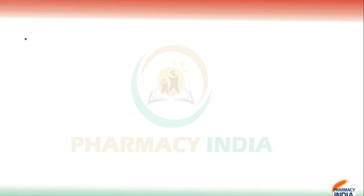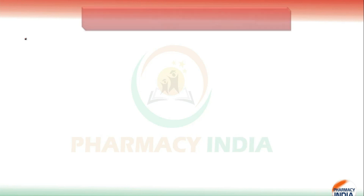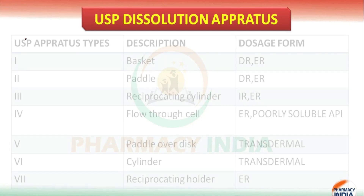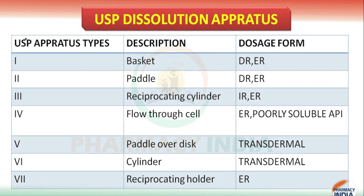Hello students, welcome to the channel. Today in this video we are going to discuss the USP dissolution apparatus and their applications — which apparatus is used for which dosage form. So first, according to the USP, the first one is the Basket.